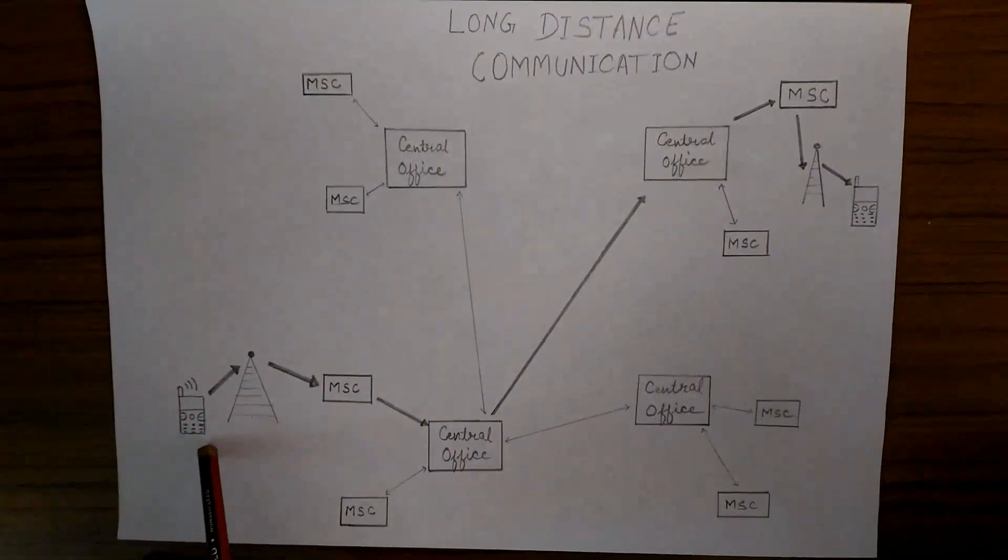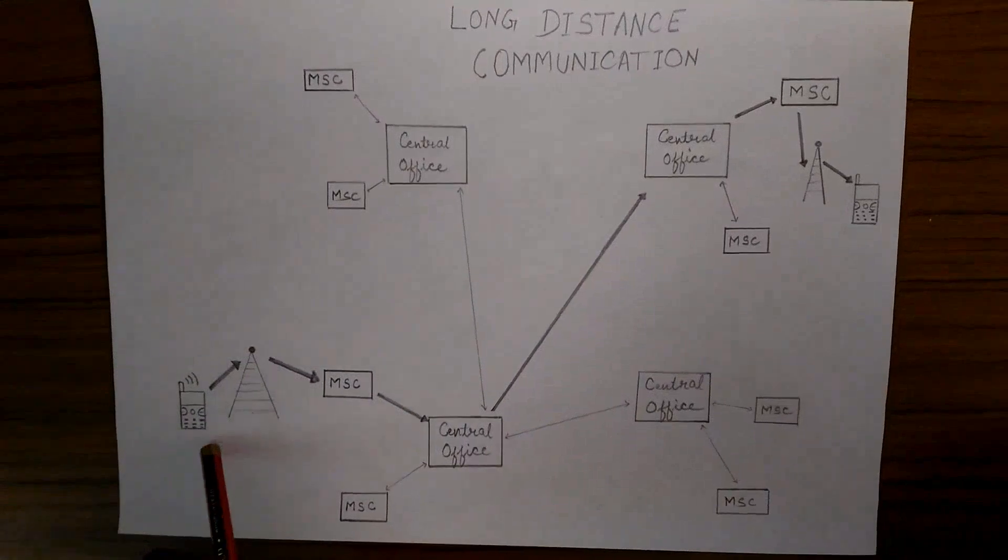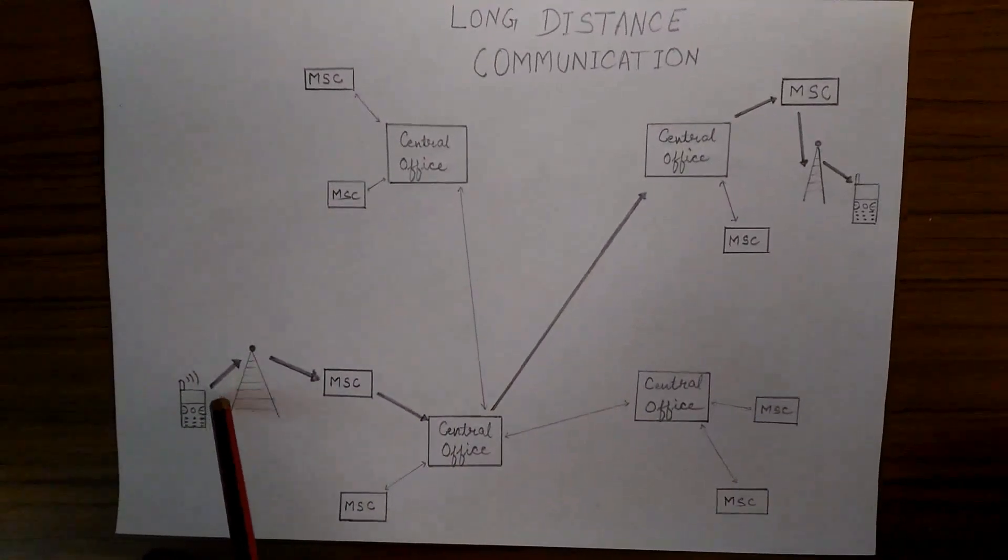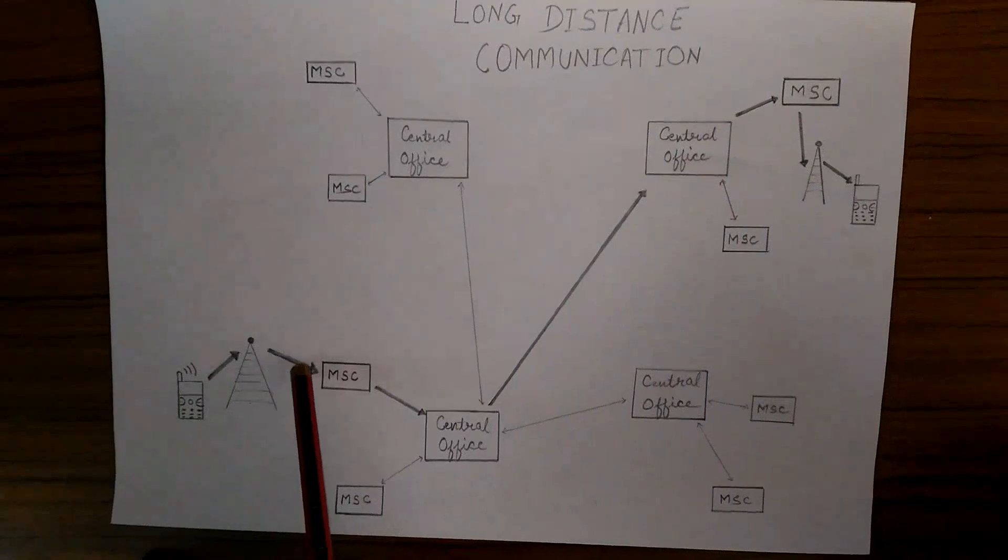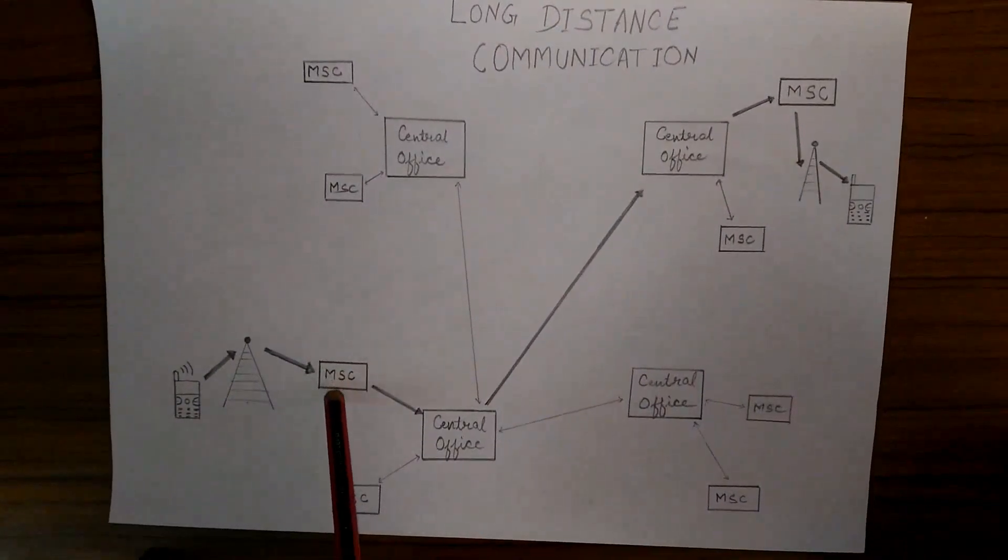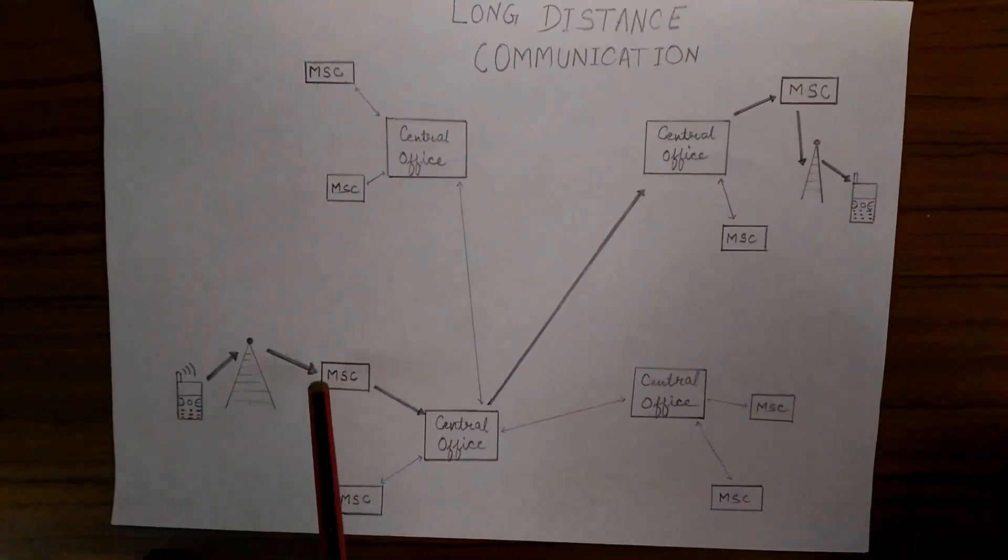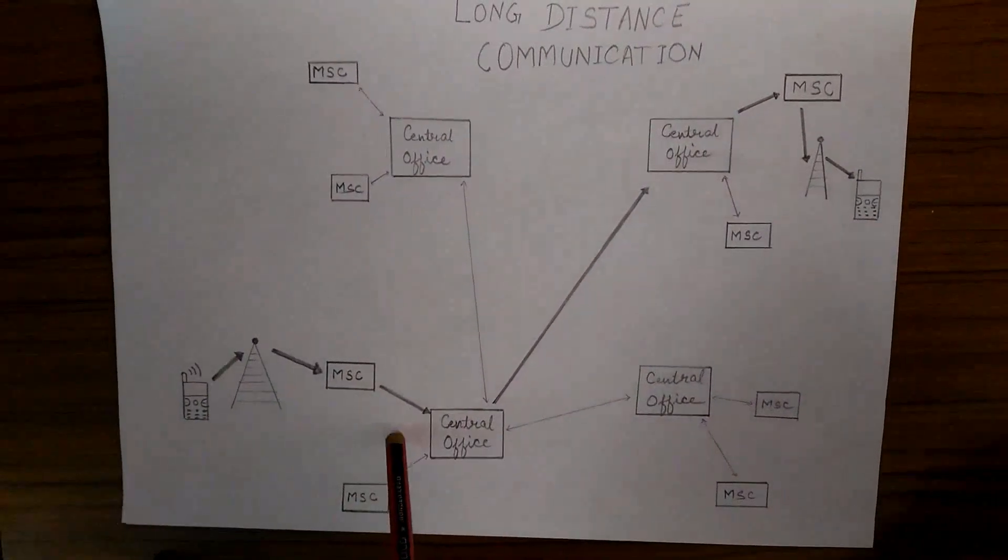Now suppose you have a friend in USA and you are calling them from here. Whenever you call, your information is sent to the base station, and then the base station sends that information to the MSC. Here, the MSC checks whether the call is short range or long range distance.